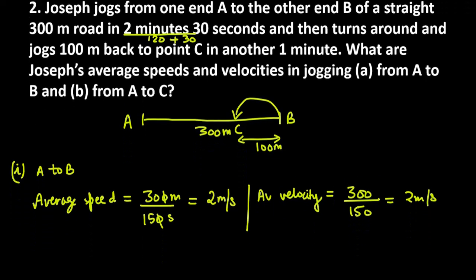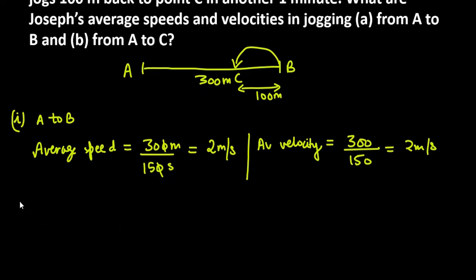Ab change jayega A to C me. Ab dekhte hai ki pehle wale case me kya ho ga. A to C hume jana hai, aur hume kya nikal na hai? Average speed. Average speed ke liye, hume total distance chahiye hai. Ab total distance yahan pe kitna ho ga? Pehle toh, usnay A to B gaya, phir B to C bhi aya. Toh, AB plus BC over total time taken.